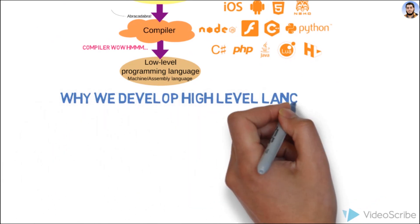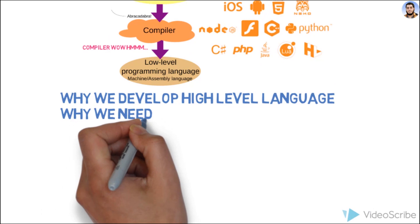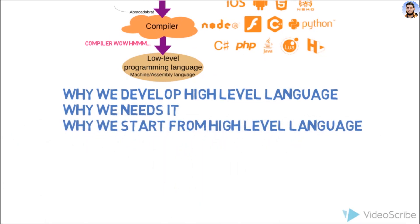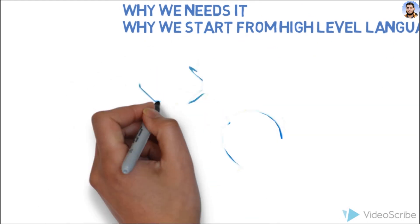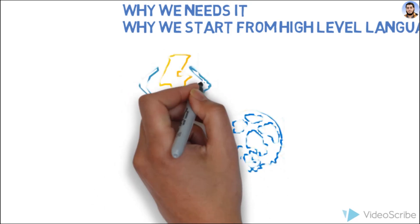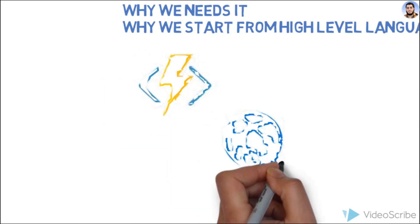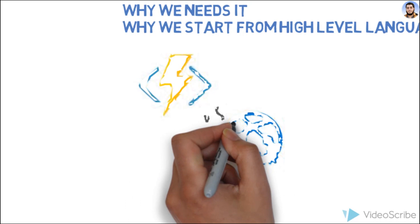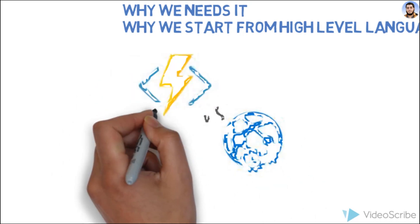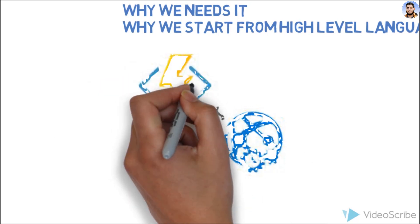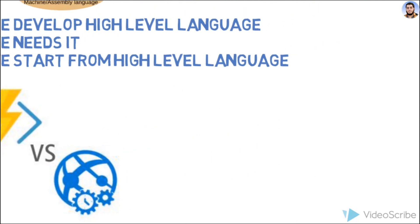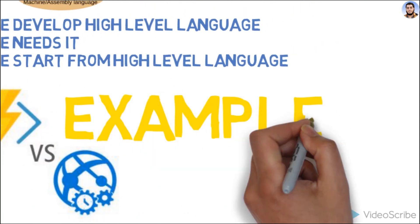مثال کے طور پر، Hello World program اگر ہم machine-level language میں لکھنا چاہیں تو وہ تقریباً 100 lines کا program ہوتا تھا۔ لیکن high-level language میں ہم ایک statement یا ایک function لکھ دیتے ہیں — اس ایک function کے پیچھے بہت بڑی coding ہوتی ہے۔ اس طرح ہم ایک short statement سے بڑا task complete کر لیتے ہیں — یہی وجہ ہے کہ ہمیں high-level language کی ضرورت ہوئی۔